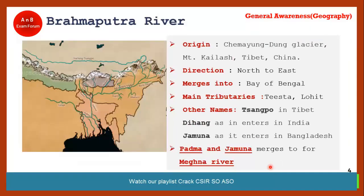The next river is the Brahmaputra. Its origin is also near Mount Kailash, but from a different glacier — the Chema Yangdung glacier in Tibet. Note this name carefully, as it is important from an exam perspective. The Brahmaputra flows from north to east.